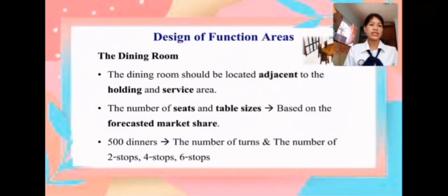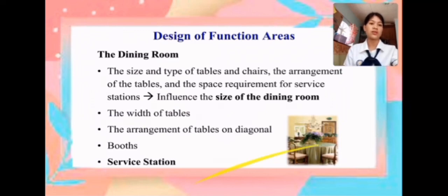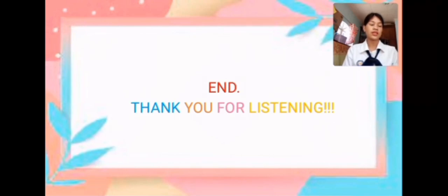The dining room should be located adjacent to the holding and service area. The number of seats and table sizes are based on the forecasted market share, number of turns, and the number of two-tops, four-tops, and six-tops. The size and type of tables and chairs, the arrangement of tables, and the space requirements for service stations all influence the size of the dining room. Factors include the width of tables, arrangement of tables, diagonals, booths, and service stations. Thank you for listening.